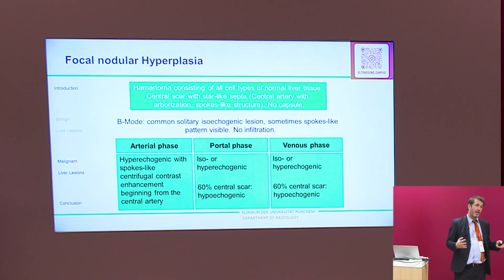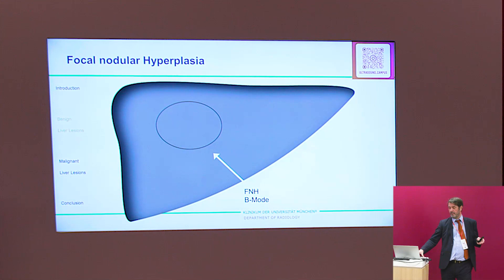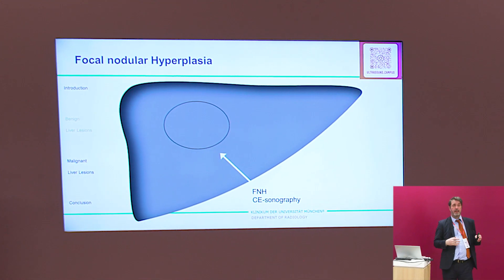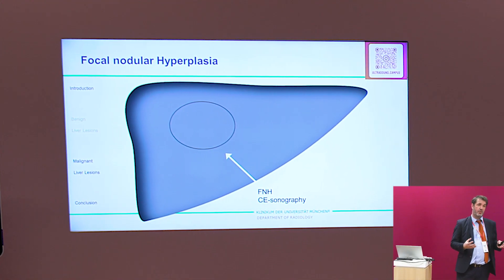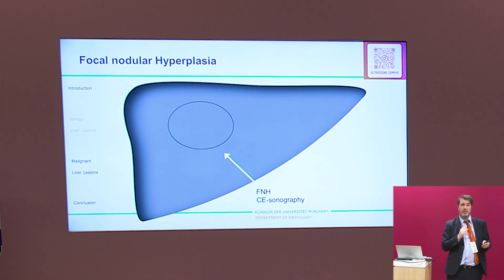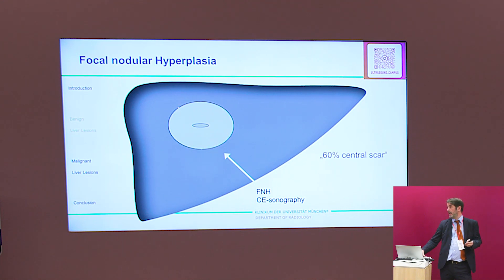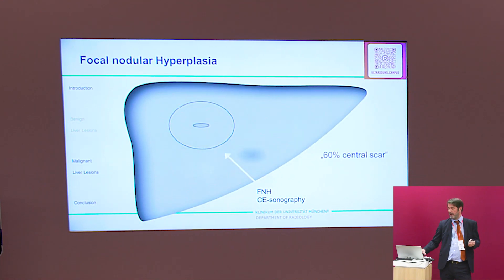FNH behaves a little differently. They have a strong uptake in the arterial phase and remain hyperenhancing in the portal venous and late phase — no washout. Sometimes FNH can be a challenge to find in grayscale because they often have the same echogenicity as surrounding tissue, so there is a good chance of missing them. When contrast is injected, you see filling from the center to the periphery, very strong — much stronger than the surrounding tissue.